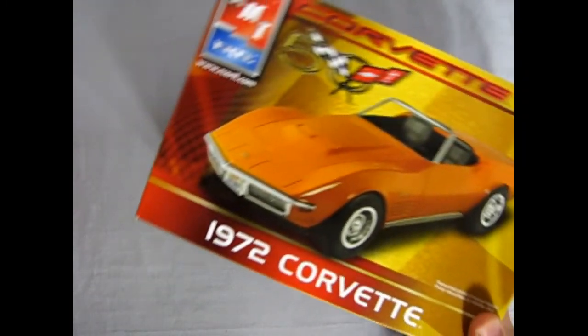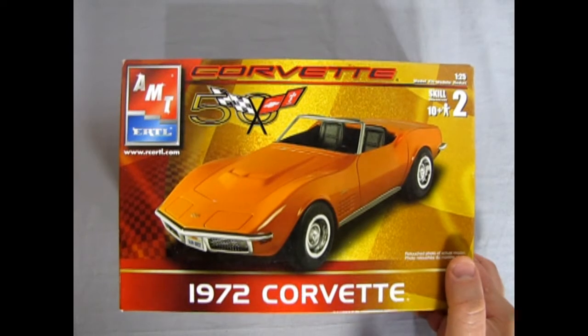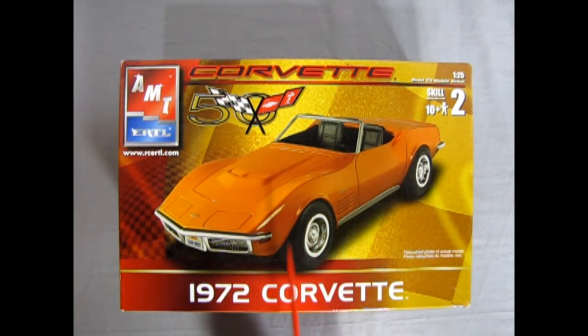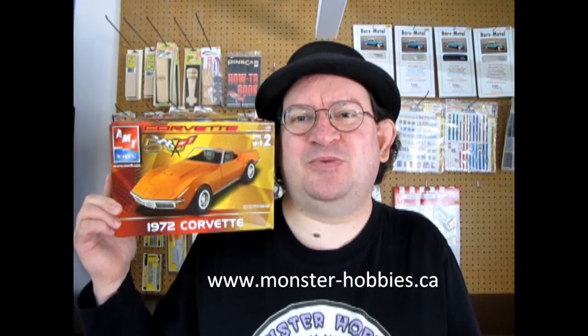That completes our look at the AMT Ertl 1972 Corvette model kit. If you've built this model we want to see your pictures over on our Facebook page and I'll leave that link in the description below. How did you like this kit? Did you find that it went together well? Did you have any troubles with it? Let us know in the comments down below. I hope you enjoyed that great video where I got to show you what was inside the 1972 Chevrolet Corvette convertible. This one is from my own collection, but if you would like to see what we have available right now on our model car hobby website, don't forget to visit us at www.monster-hobbies.ca